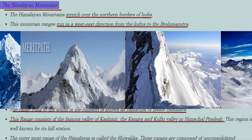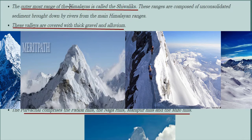The Himalayan mountains stretch over the northern borders of India, running in a west to east direction from the Indus to the Brahmaputra region. The Himalayas is one of the most rugged mountain barriers of the world. The outermost range of the Himalayas is known as Shivaliks, composed of unconsolidated sediments brought down by rivers, with valleys covered by thick gravel and alluvium. The part of the Himalayas lying between the Indus and the Satlesh is known as Punjab Himalaya or Kashmir and Himachal Himalaya. The part lying between the Satlesh and Kali rivers is known as Kumaon.